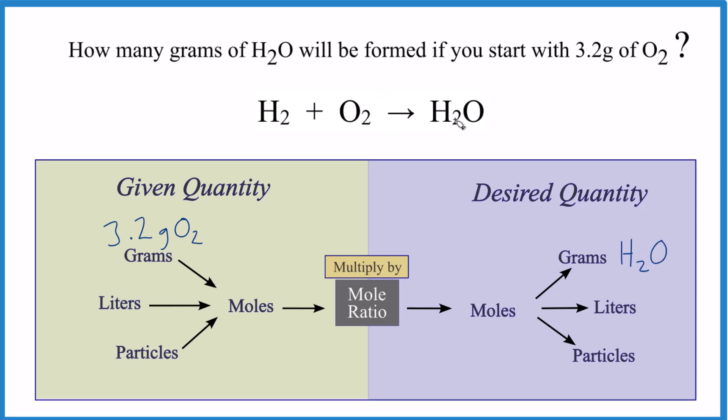First, let's balance the equation. We have one oxygen here and two here, put a two here. Two times two is four, so put a two here. That gives us four—that's balanced. Always have to balance the equation for stoichiometry.